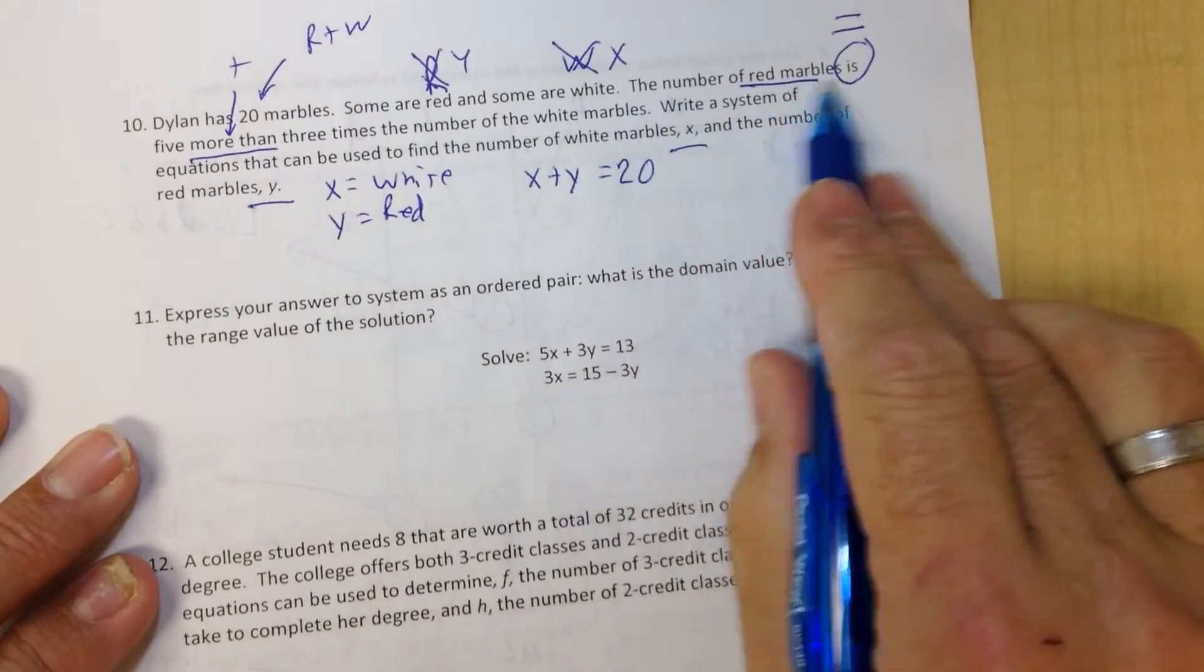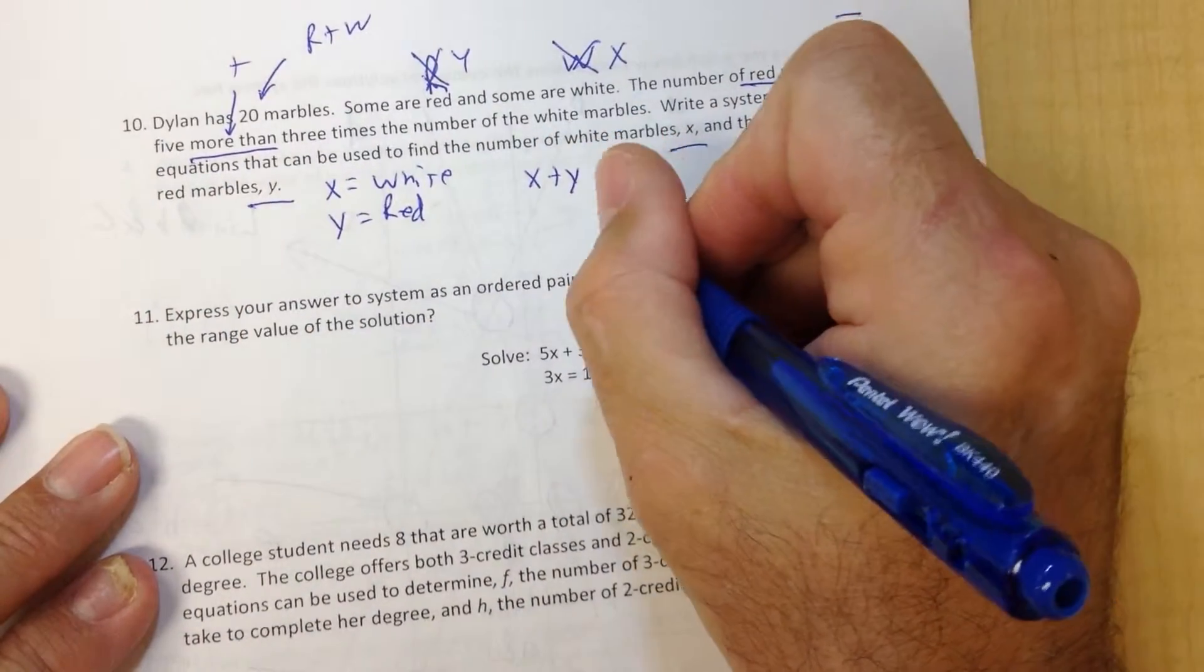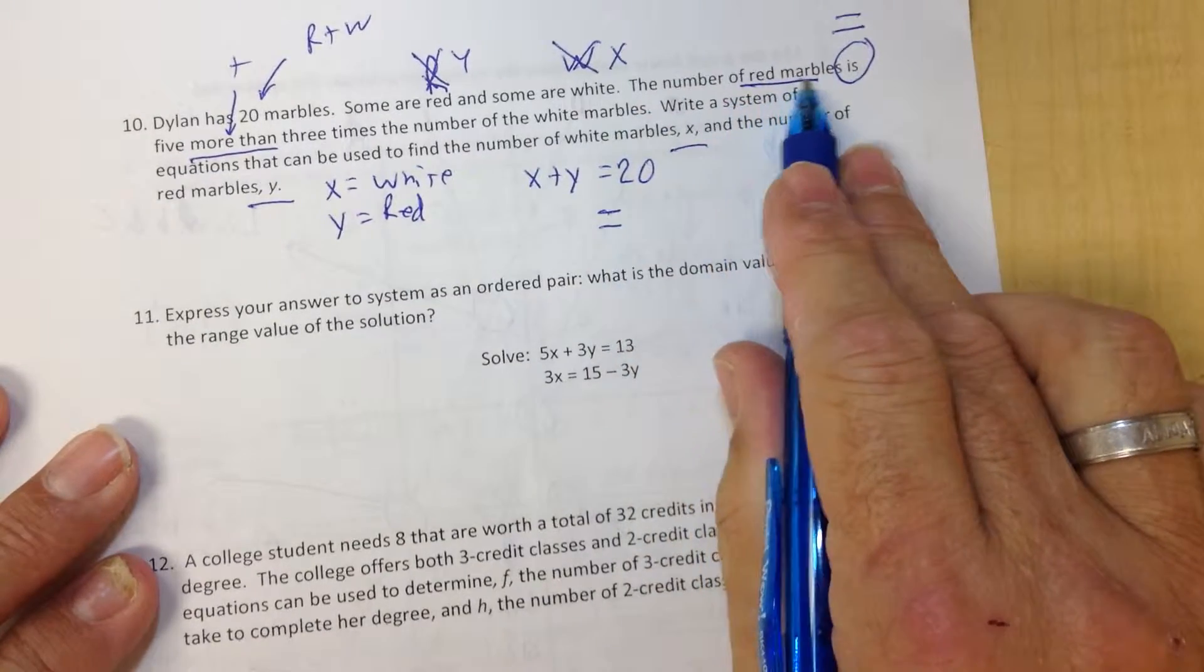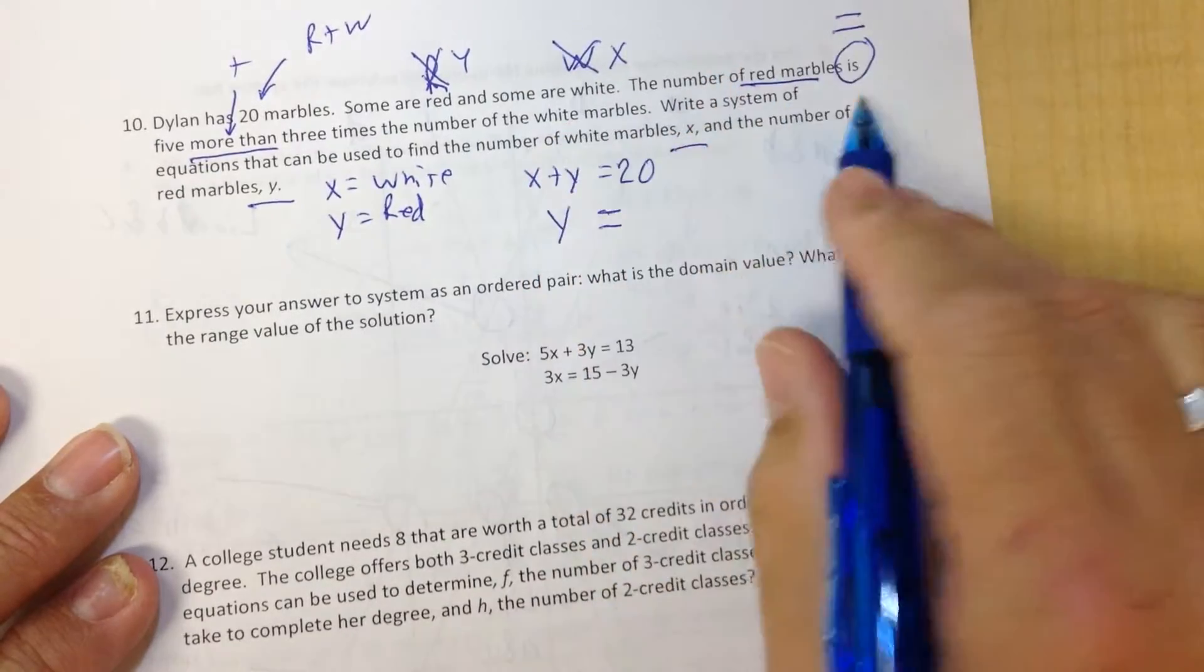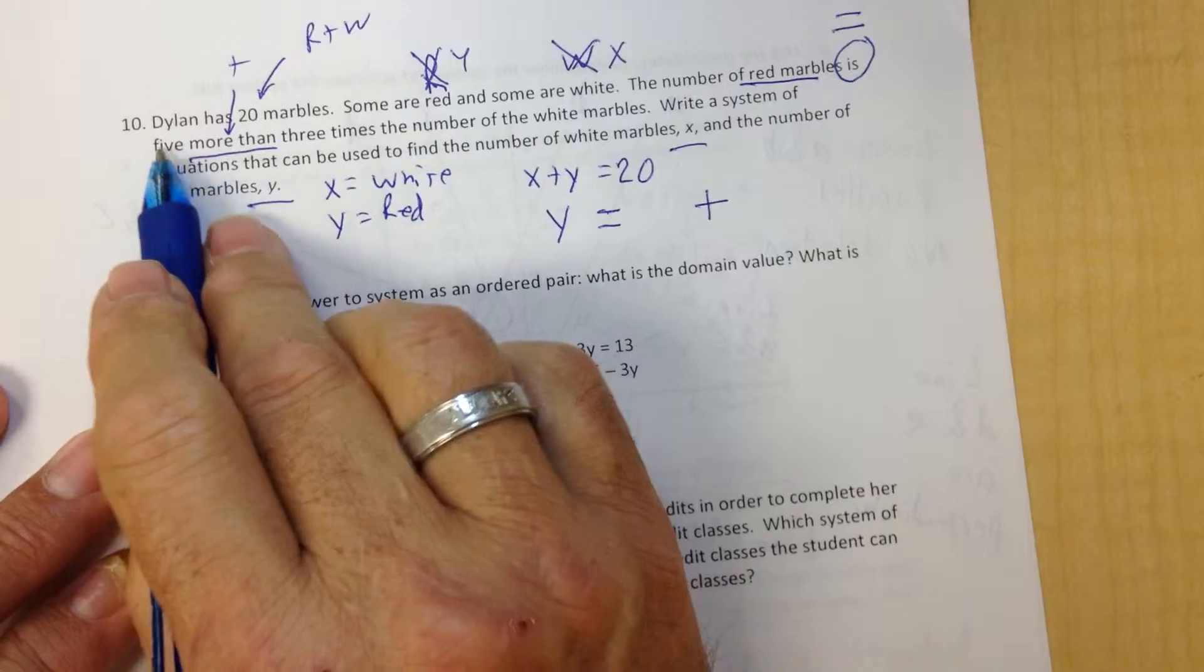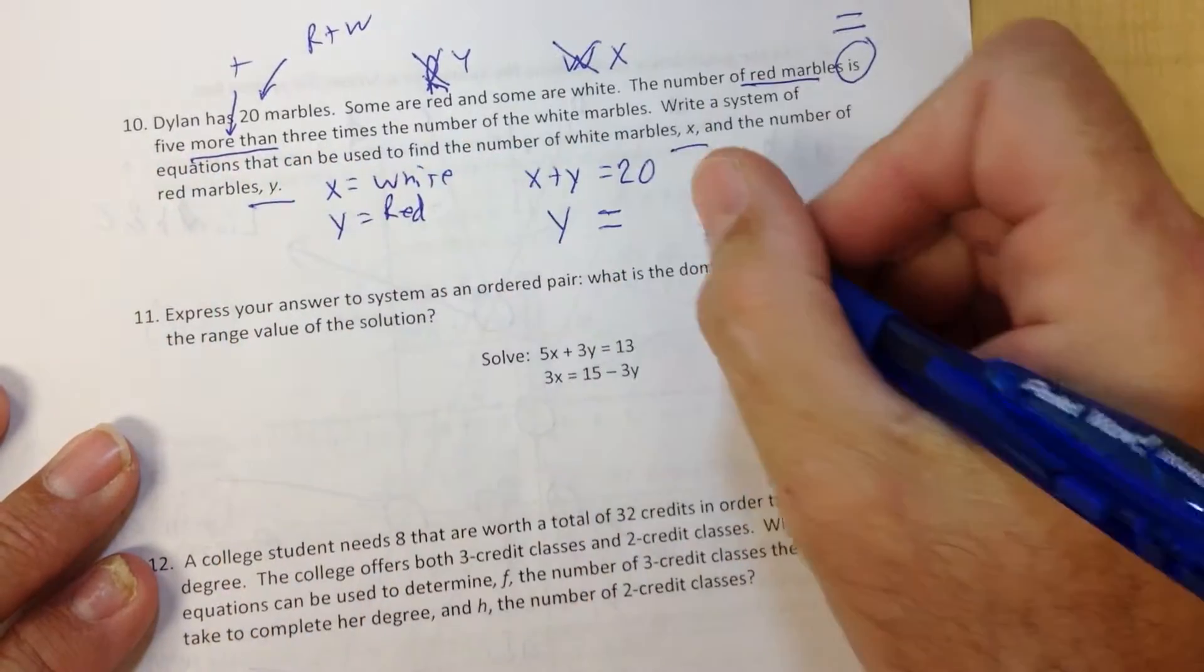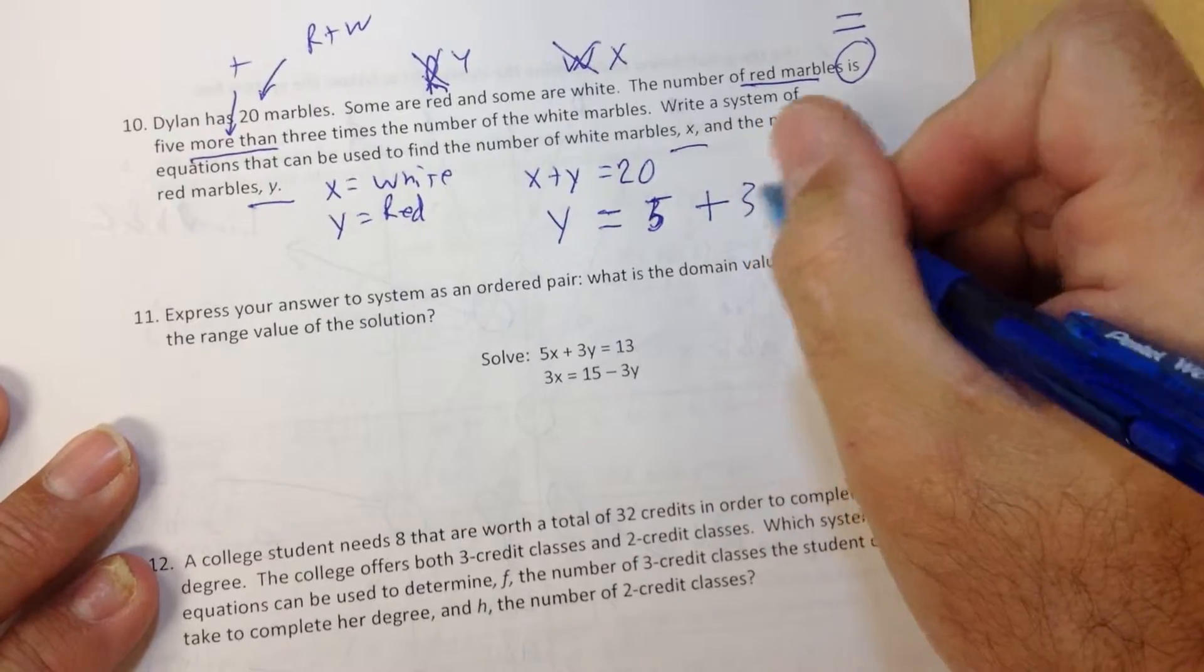And this right here will be my second equation. The word 'is' turns into equals. What's to the left of 'is'? The number of red marbles. The red marbles are Y. 'Is'... the 'more than' changes to a plus: 5 plus 3 times the number of white marbles, 5 plus 3X.